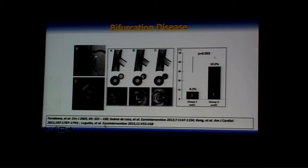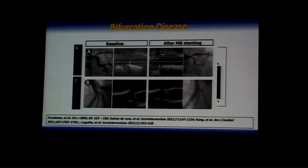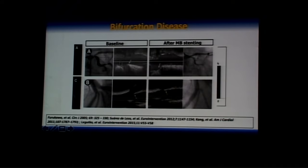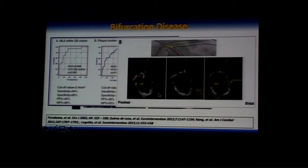For bifurcation disease, IVUS helps in four areas. First, it determines whether disease is in the main branch versus true ostial side branch disease. Second, a spiky carina and large plaque burden opposite to the carina predicts high incidence of side branch compromise post-crossover stenting. Third, side branch MLA <2.4 mm², plaque burden >51%, and POC area <3.7 mm² predict a two-stent strategy. Fourth, IVUS clarifies the position of wire crossing — proximal or distal cell.